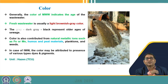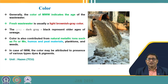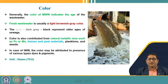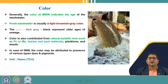Starting with physical characteristics, the first is color. Color basically indicates the stage of the wastewater from its generation — that is, the age of the wastewater. Fresh municipal wastewater has a light brownish to gray color, which may become dark gray and black depending upon the stage of decomposition. Bacteria undergo anaerobic decomposition and stabilize over time, and the color changes depending on the degree of degradation.